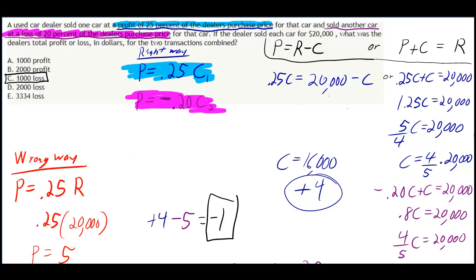To do it the right way, you use profit equals revenue minus cost, or alternatively, profit plus cost equals revenue. If you plug in 0.25C for P, you get either formula. The second one is easier to work with. If you do 0.25C plus C, that's 1.25C, which is what I had before.